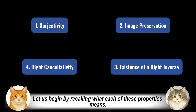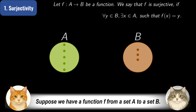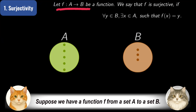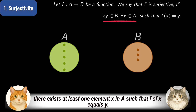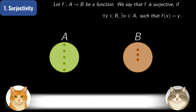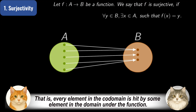Let us begin by recalling what each of these properties means. Suppose we have a function f from a set A to a set B. First, the standard definition for surjectivity requires that for every element y in B, there exists at least one element x in A such that f of x equals y. That is, every element in the codomain is hit by some element in the domain under the function.